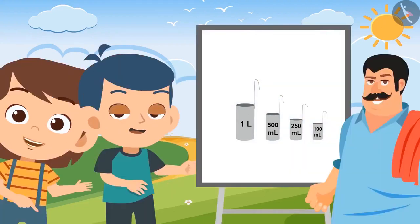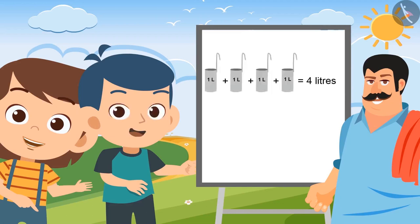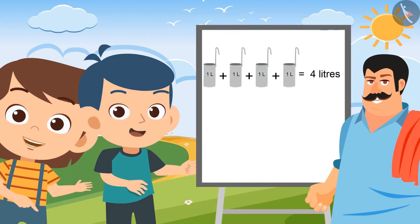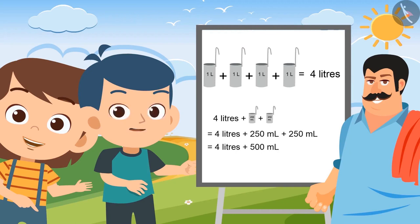Brother, which vessel will you use to give 4 and a half liters of milk? I will use the 1 liter container 4 times to measure 4 liters of milk and the 500 ml container to measure the rest half a liter. You can also measure 4 liters by using the 1 liter container 4 times and the 250 ml container 2 times. Yes, this can also be done.